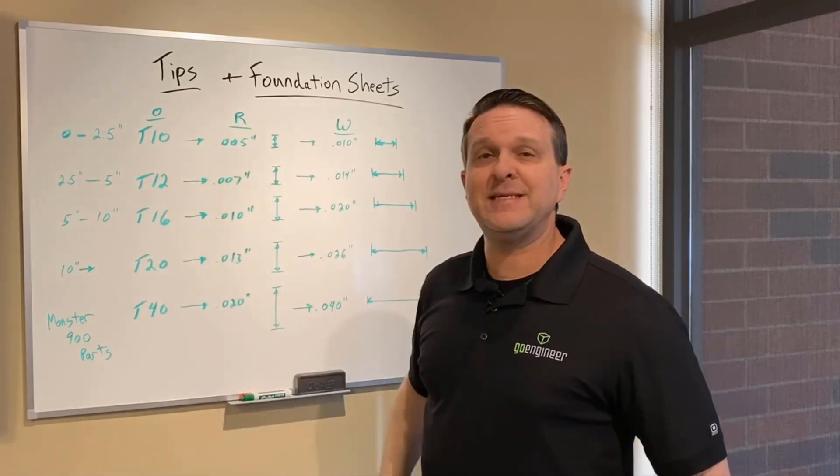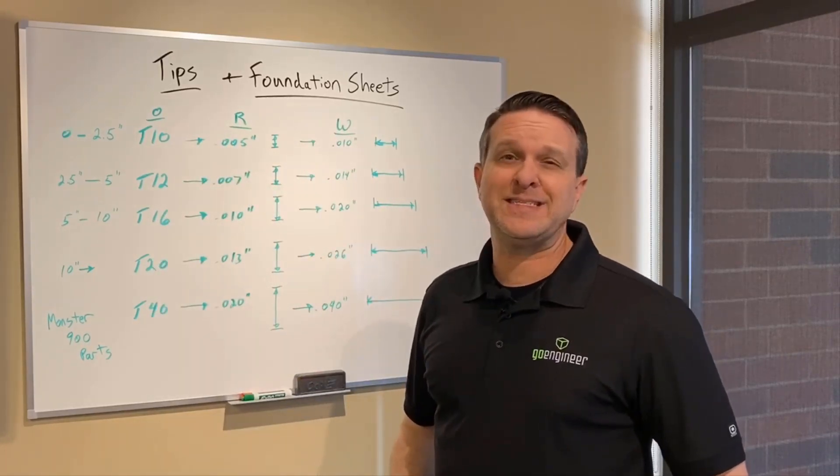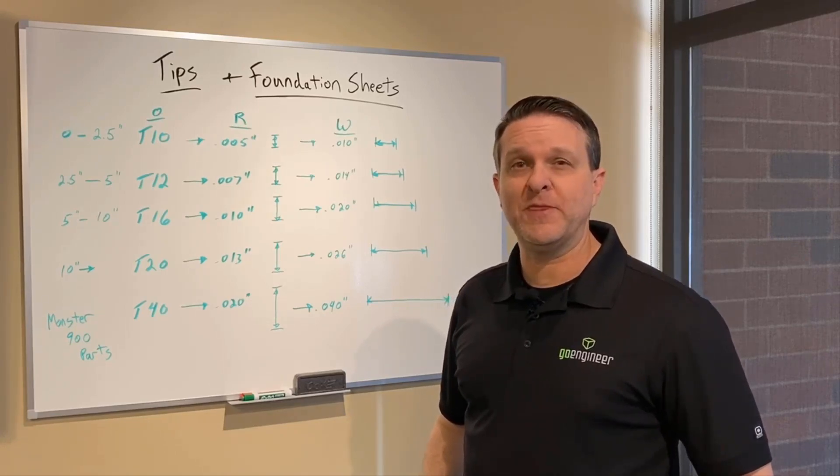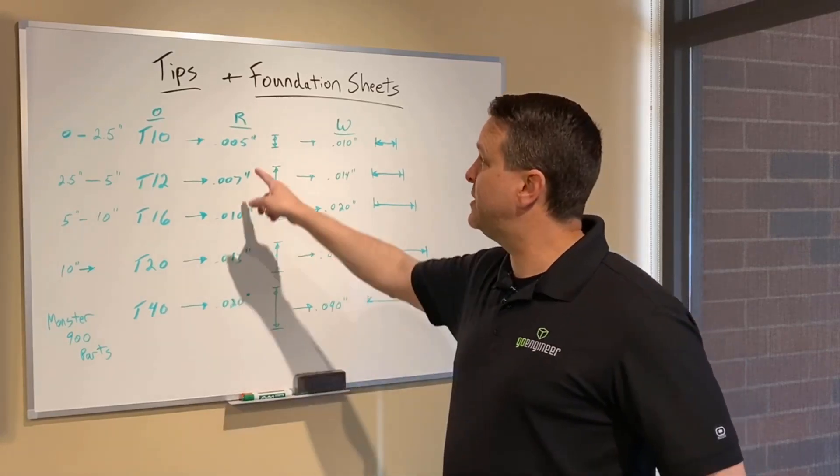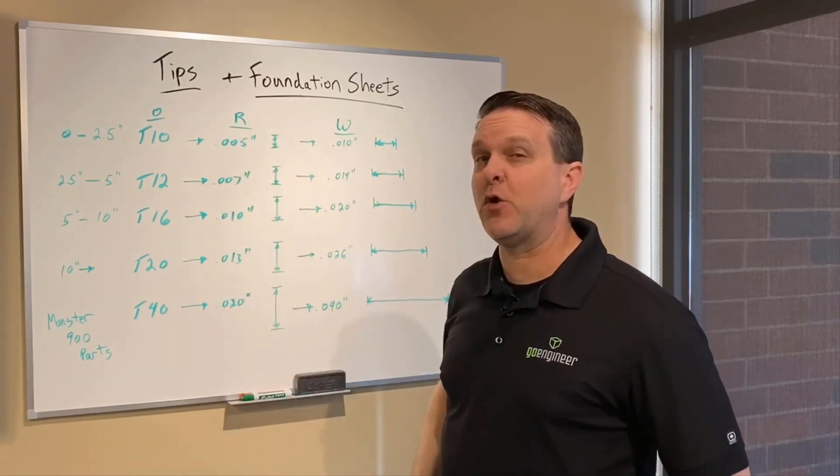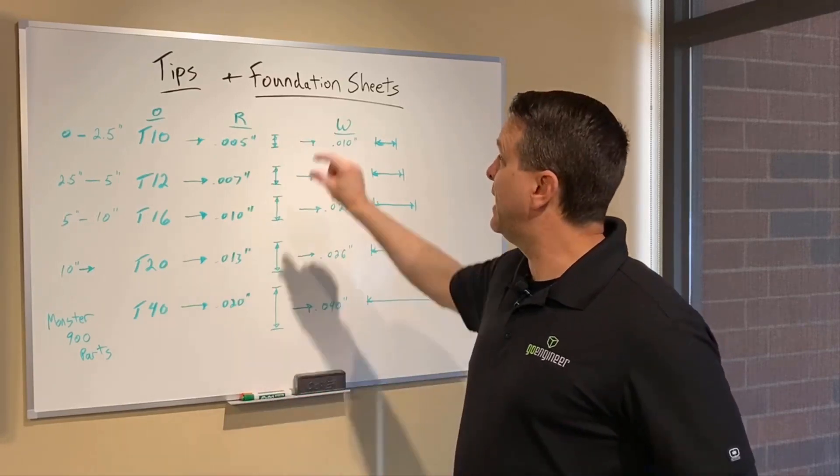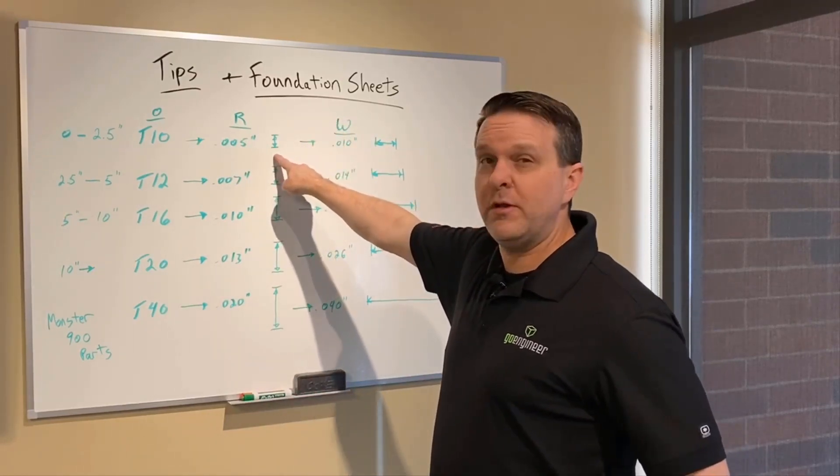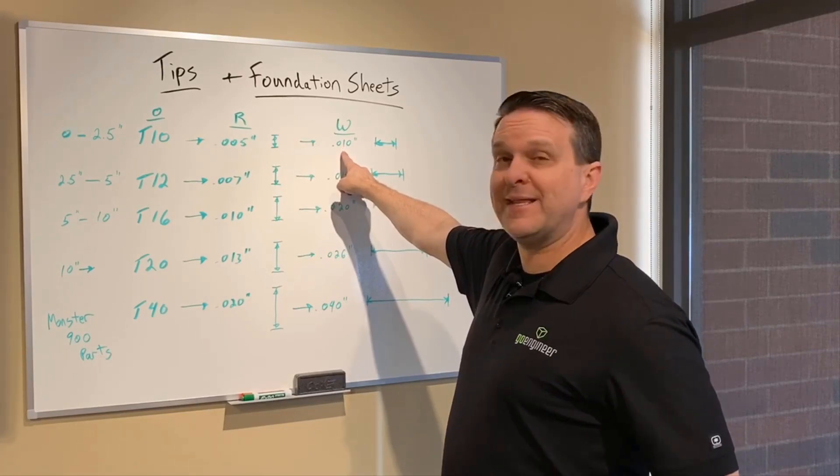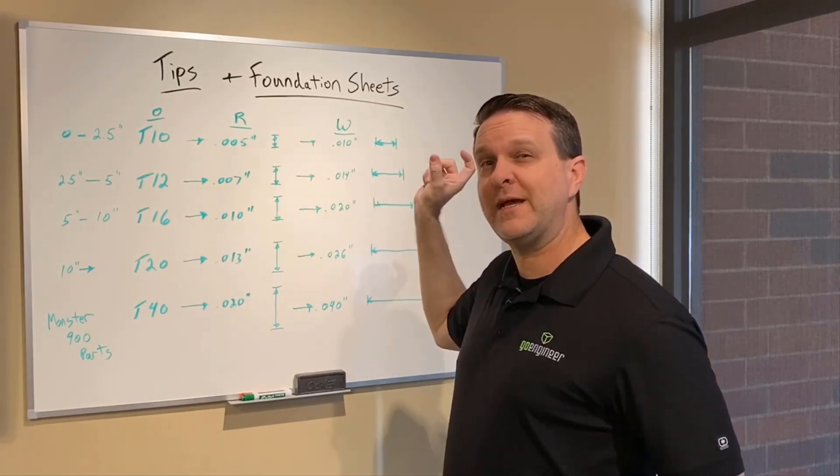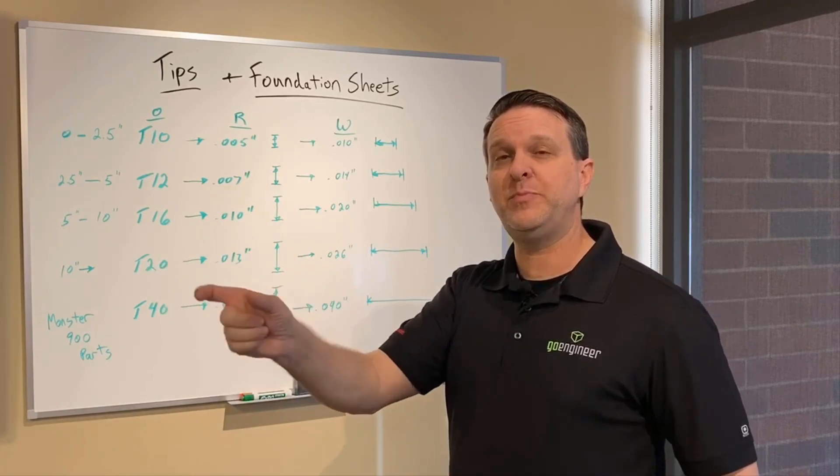A T10 tip, a T10 is a 10 thousandths orifice opening. So it's a small hole producing a 5 thousandths layer resolution height of material that then correlates to a width of 10 thousandths of material for what it's exactly extruding out for its bead.